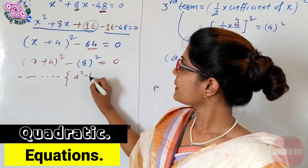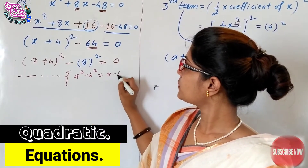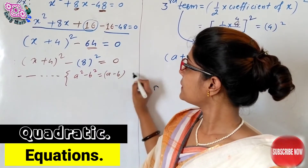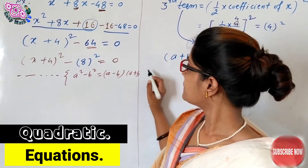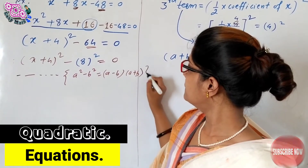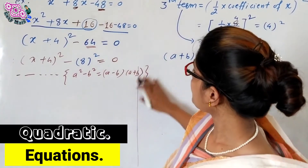Now apply the identity a squared minus b squared equals (a minus b)(a plus b). So (x + 4)² minus 8² can be factored using this identity.